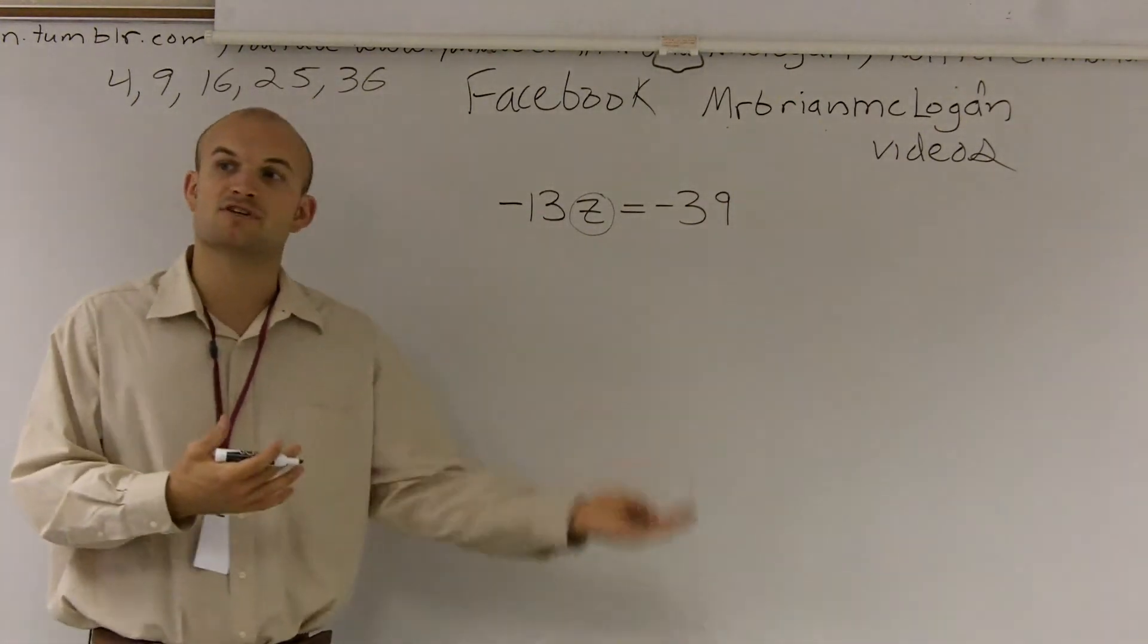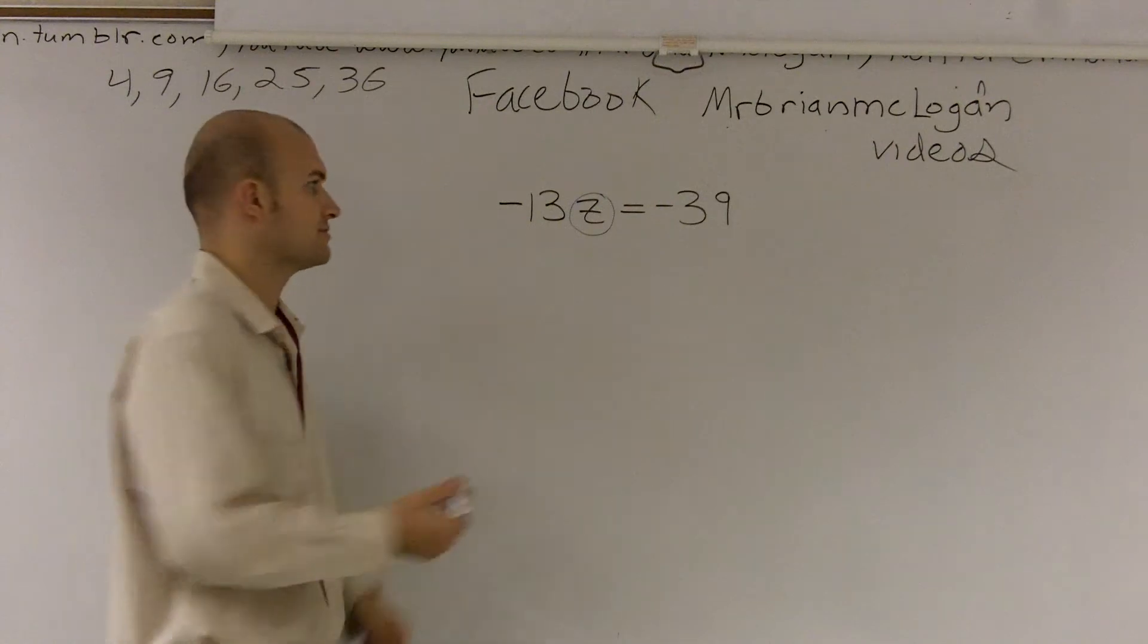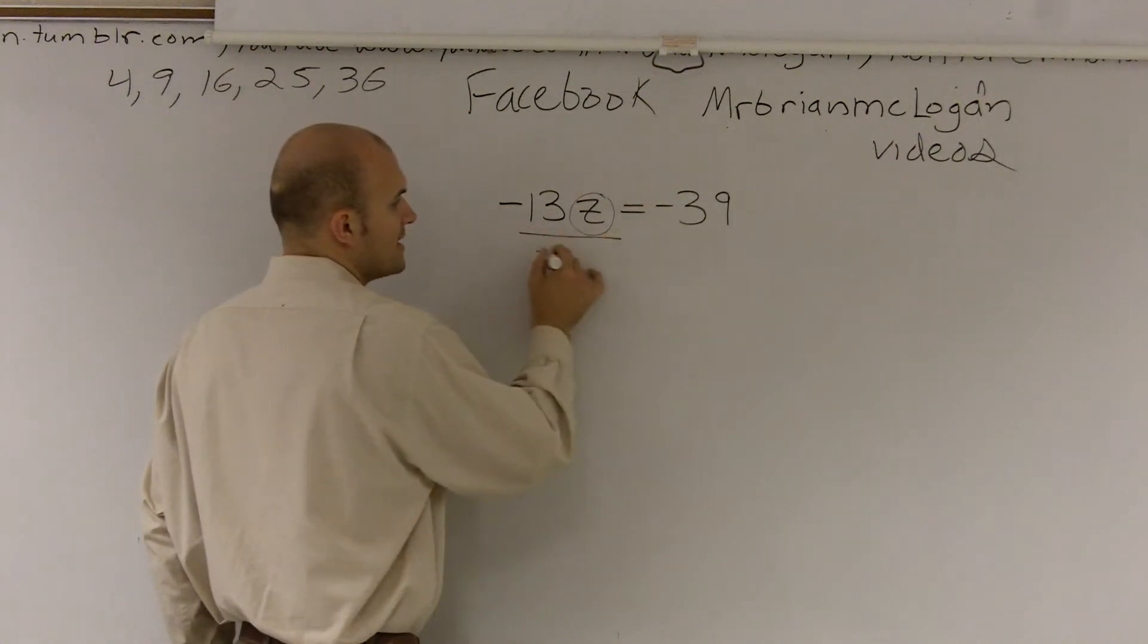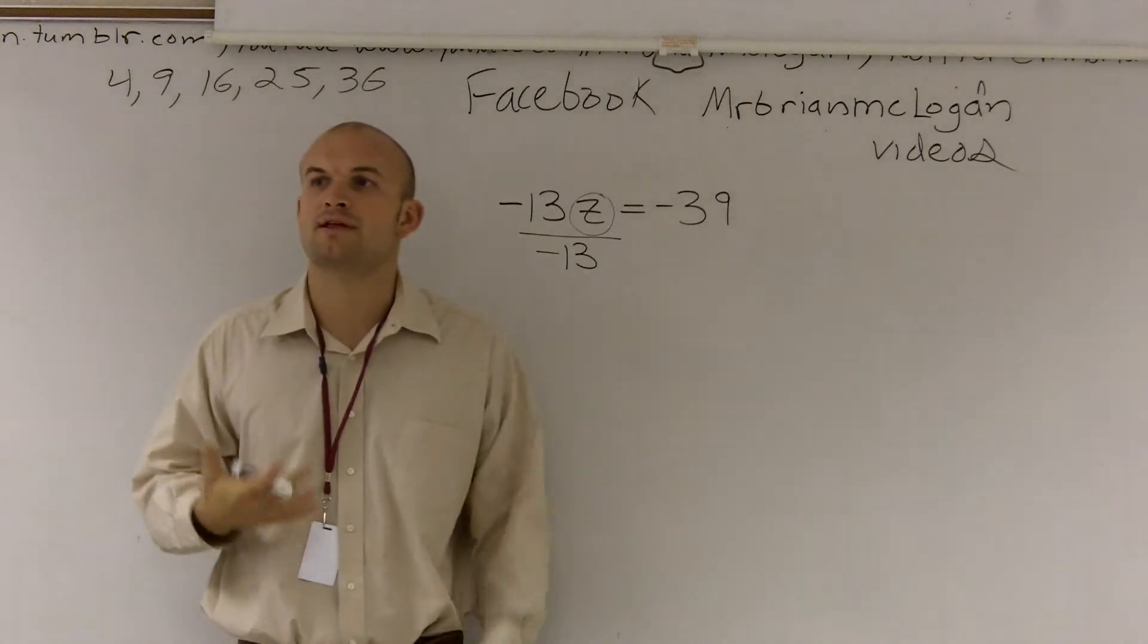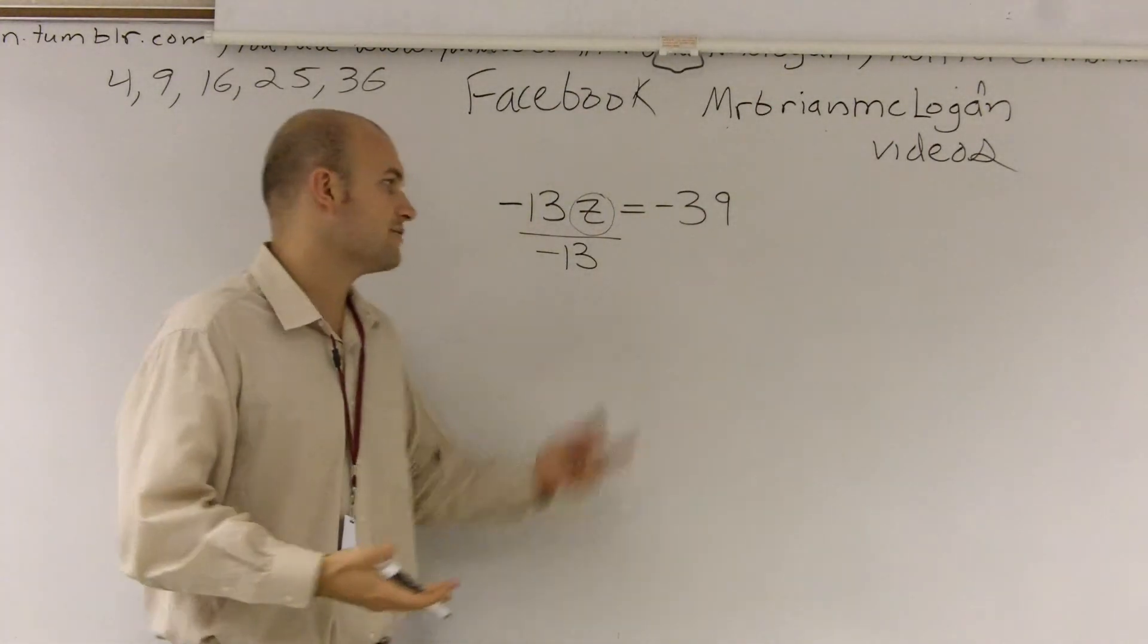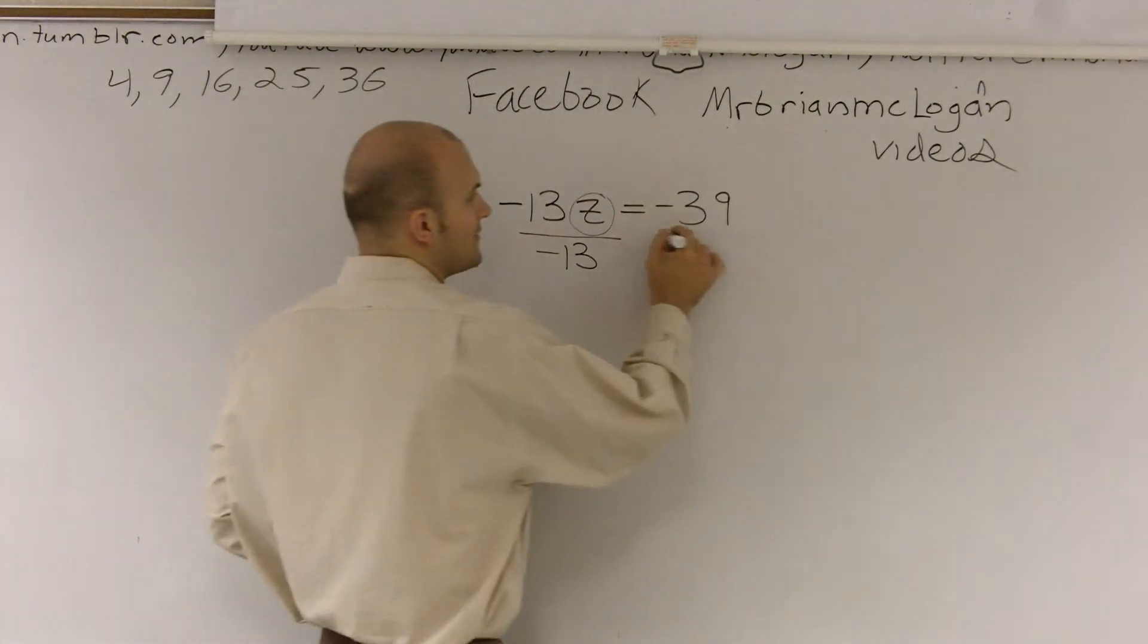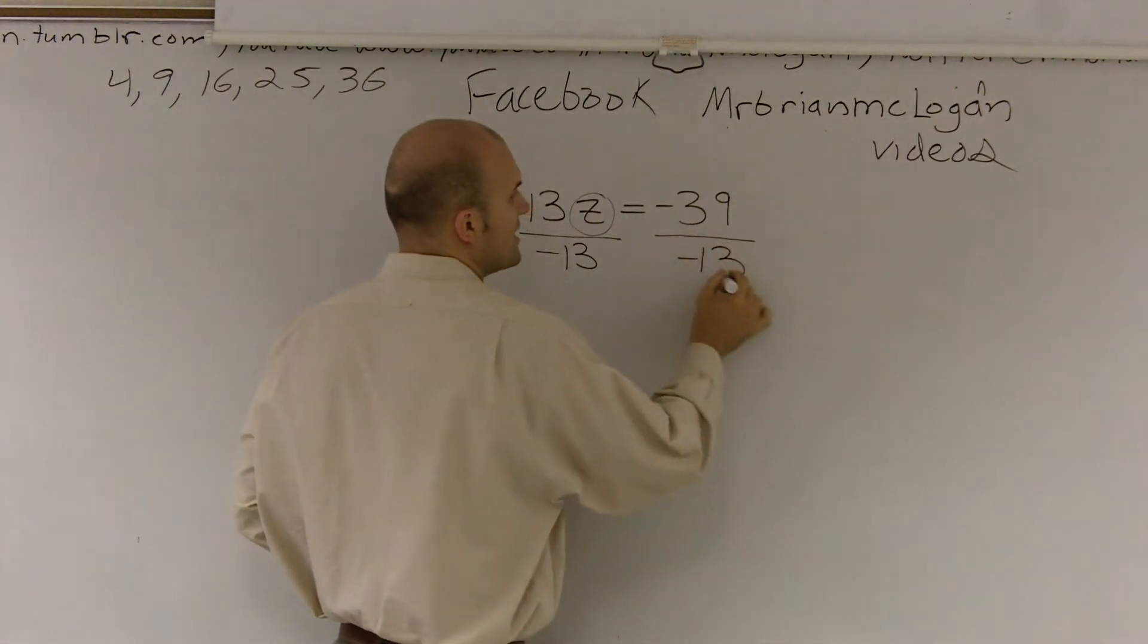So to undo multiplication, the inverse of multiplication is division. So I'm going to divide by negative 13. And from our notes, you guys should remember that the properties of equality say whatever you do on one side, you have to do on the other side of an equation.